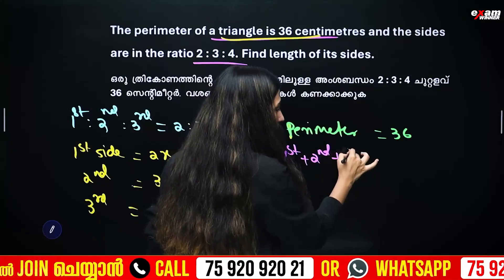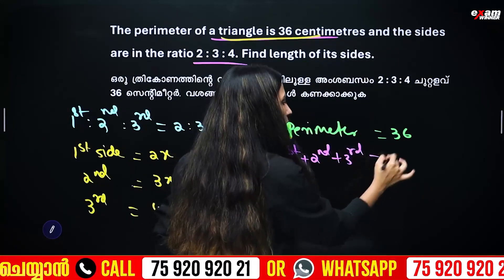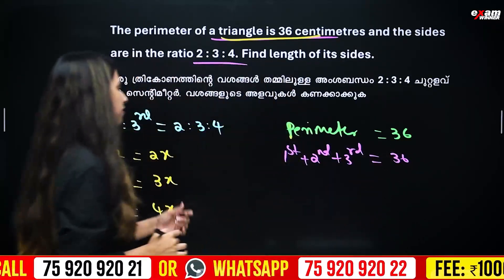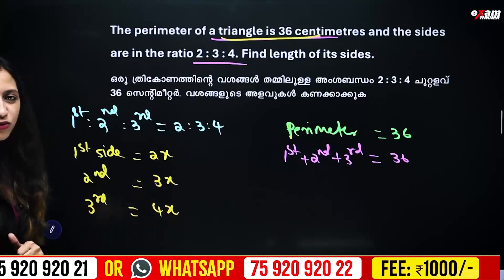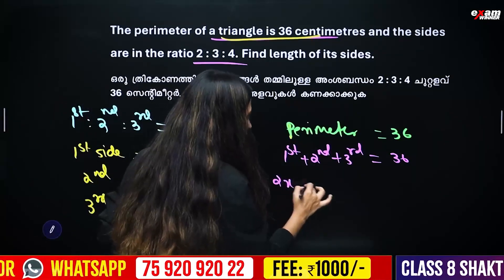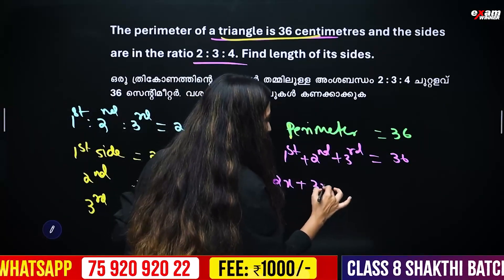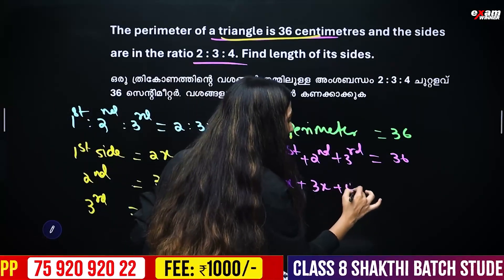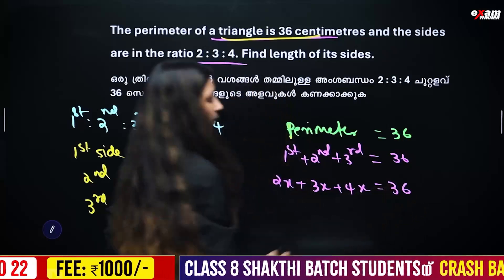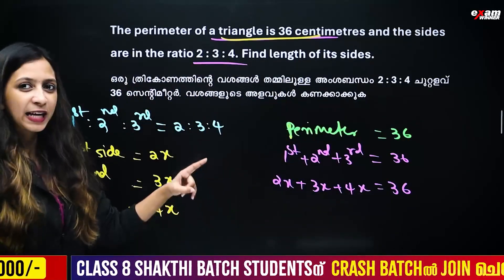So the perimeter equation is: 2x plus 3x plus 4x equals 36 cm.